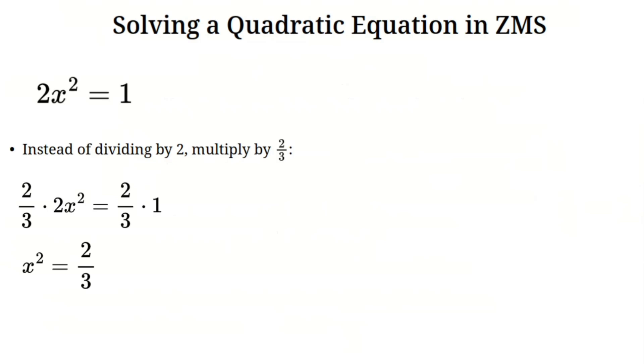Since two times two thirds is just one, this simplifies to x squared equals two thirds. To find x, we take the square root of both sides, which gives x equals plus or minus the square root of two thirds. And that's our answer. Let's check by plugging this value back into our original equation. If we square x, we get two thirds. Multiplying by two gives us four thirds. And in ZMS, four thirds is just one, so our solution is correct.